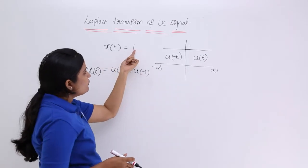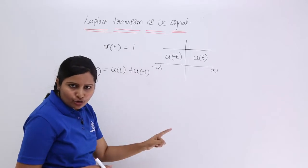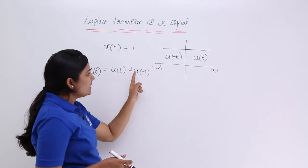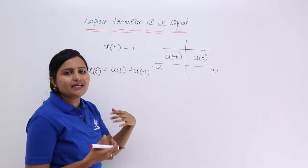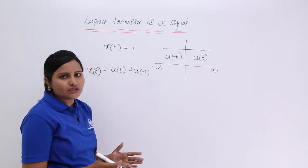For example if your DC is equivalent to 2 then 2 u of T plus 2 u of minus T is the equivalent of DC in terms of unit step.